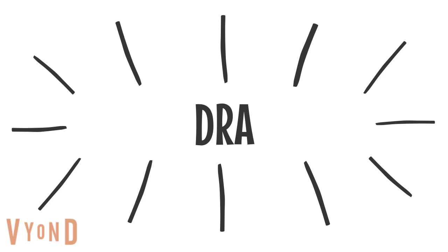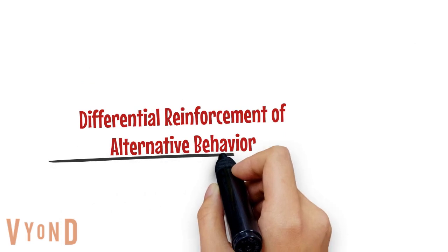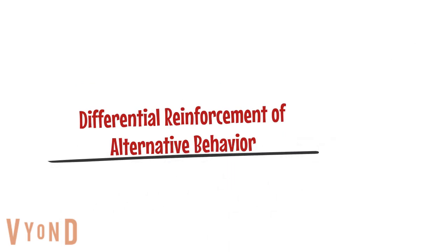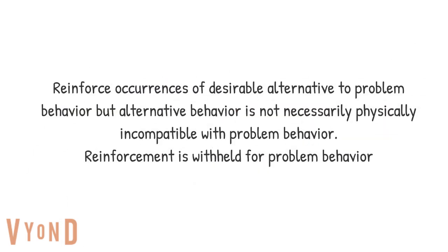The next type is DRA — differential reinforcement of alternative behavior. This means we're reinforcing occurrences of a desirable alternative to the problem behavior and then withholding reinforcement for the problem behavior. It's important to remember that DRA does not necessarily mean that the behavior is physically incompatible with the problem behavior.